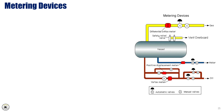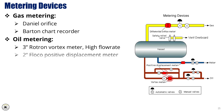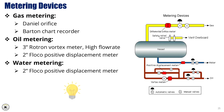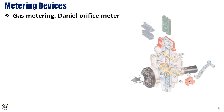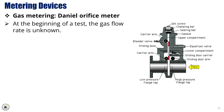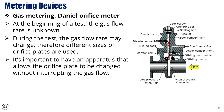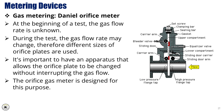The separator has different metering devices including gas metering with a Daniel orifice and Barton chart recorder, oil metering with a 3-inch Rotron vortex meter for high flow rate and a 2-inch positive displacement meter for low flow rate, and water metering with a 2-inch positive displacement meter. The orifice plate generates a differential pressure which, when combined with static pressure and gas temperature, allows a gas rate to be calculated. At the beginning of a test the gas flow rate is unknown, and during the test it may change; therefore, different sizes of orifice plates are used. It is important to have an apparatus that allows the orifice plate to be changed without interrupting the gas flow — the orifice gas meter is designed for this purpose.